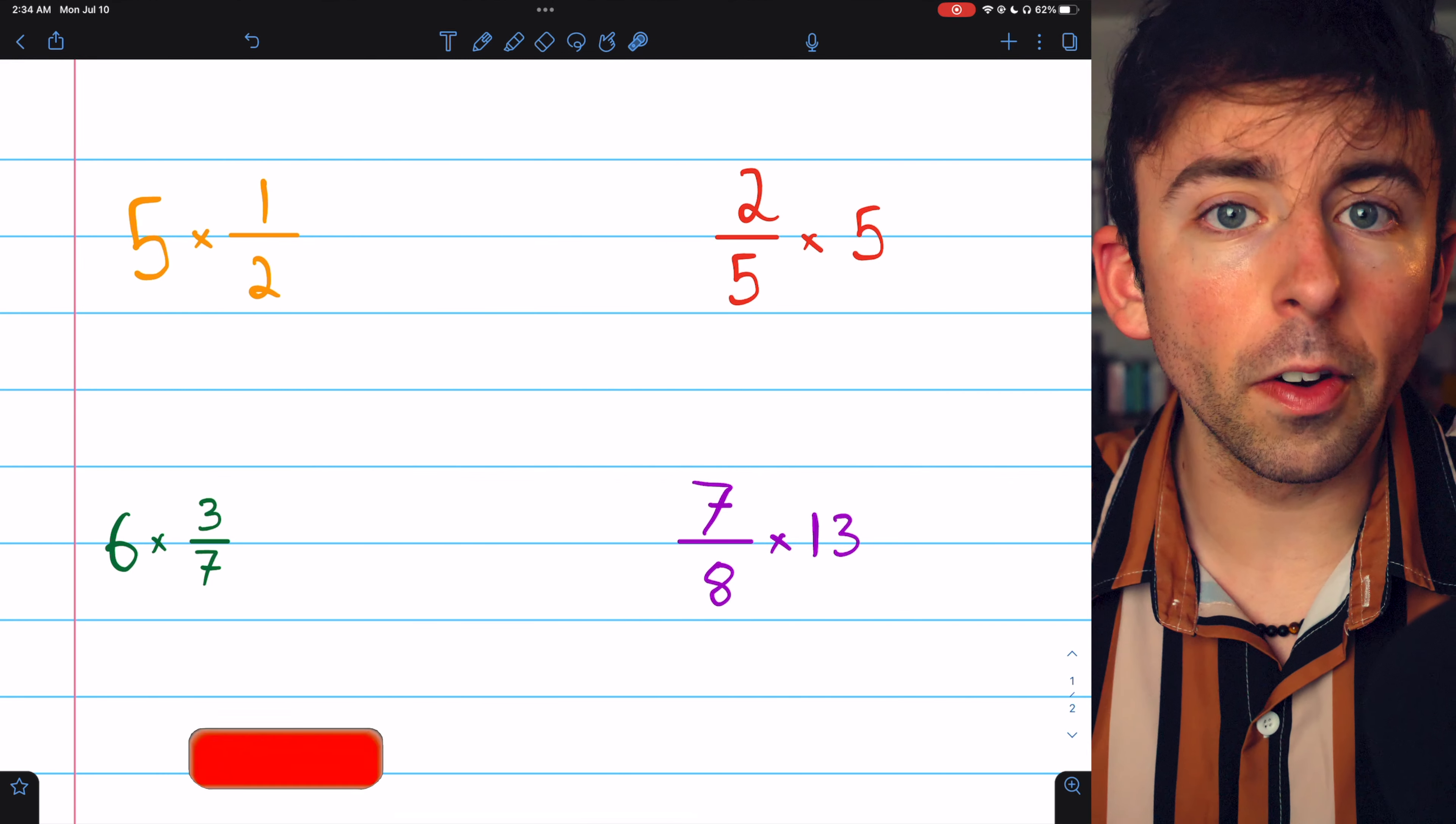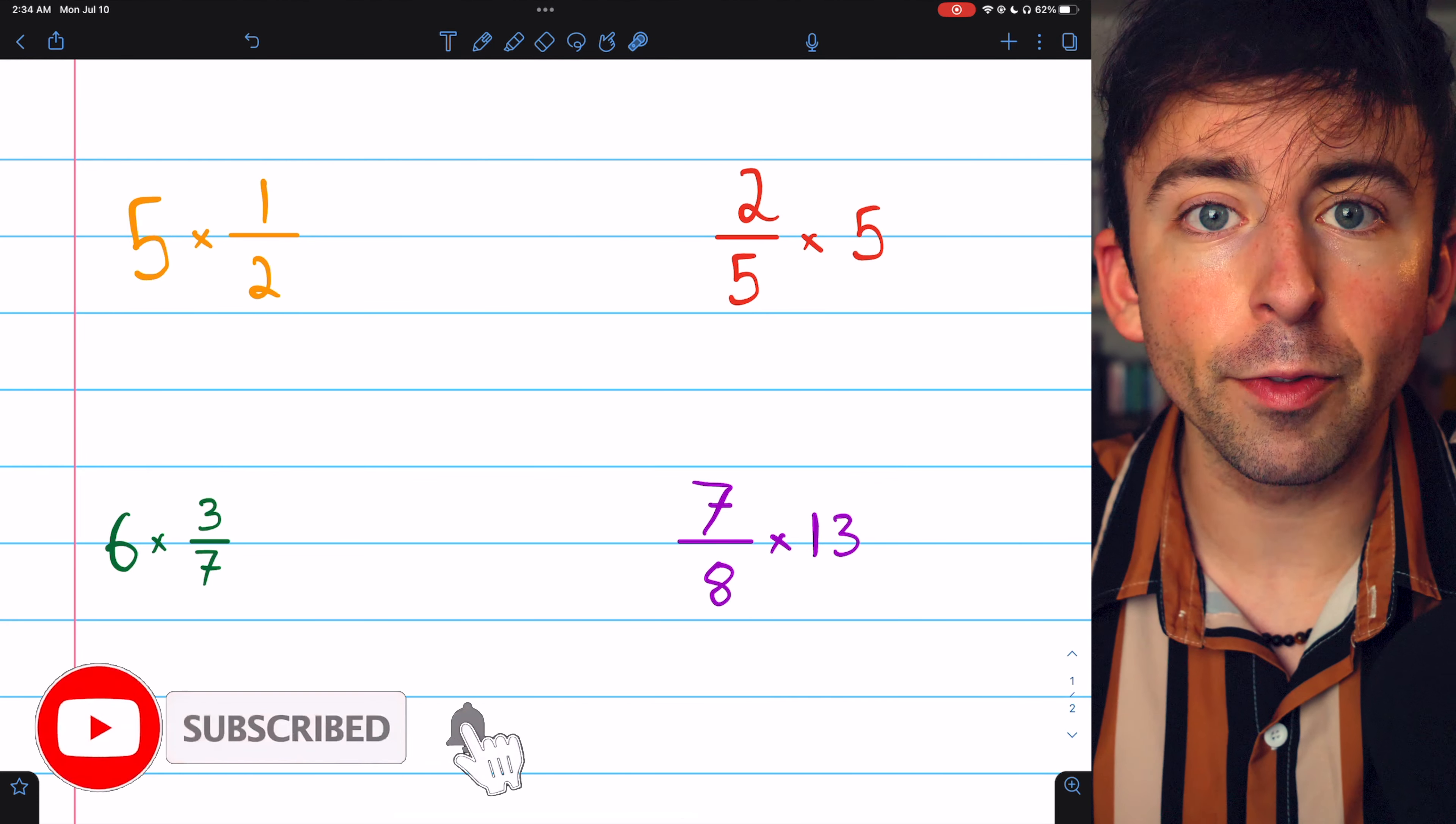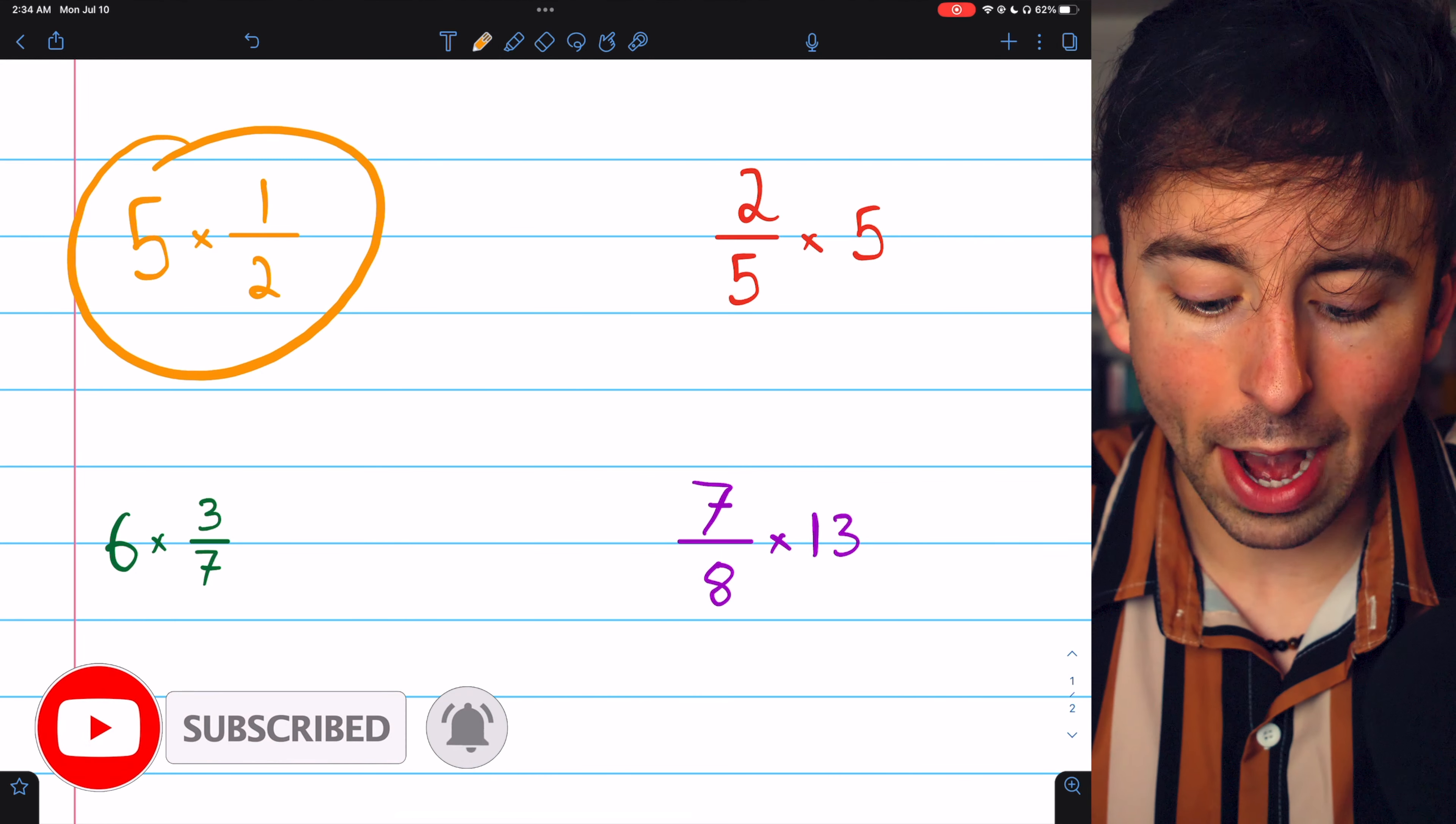Let's do these four examples to learn how to multiply whole numbers by fractions, beginning with 5 times 1 half.